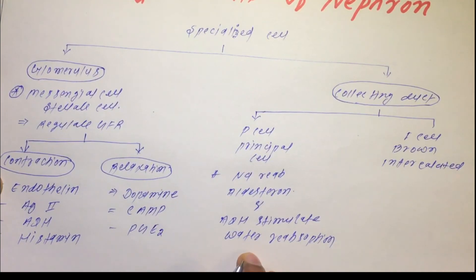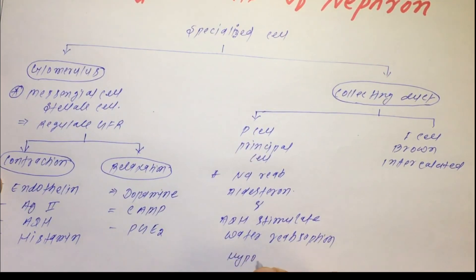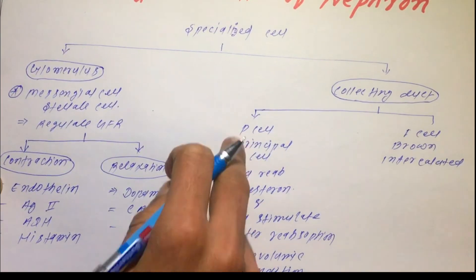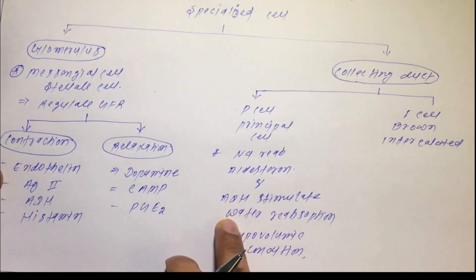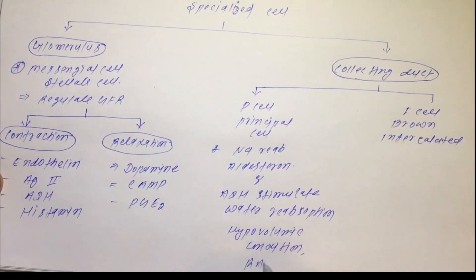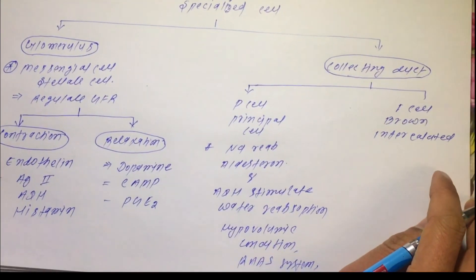ADH stimulates water reabsorption. This is the main function of the principal cell — it maintains the hypovolemic condition of the body.